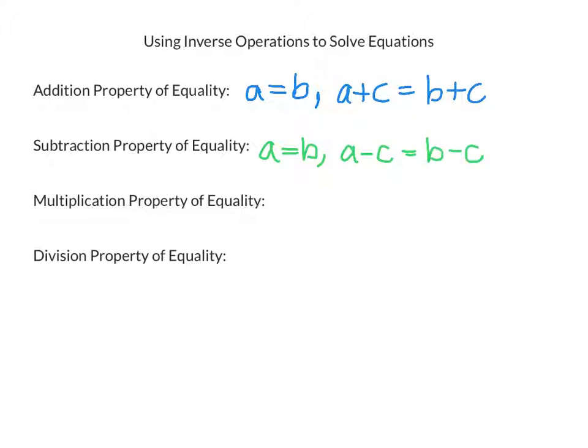The multiplication property of equality states that if one quantity equals another, then multiplying both sides by the same quantity will keep it equal or balanced.